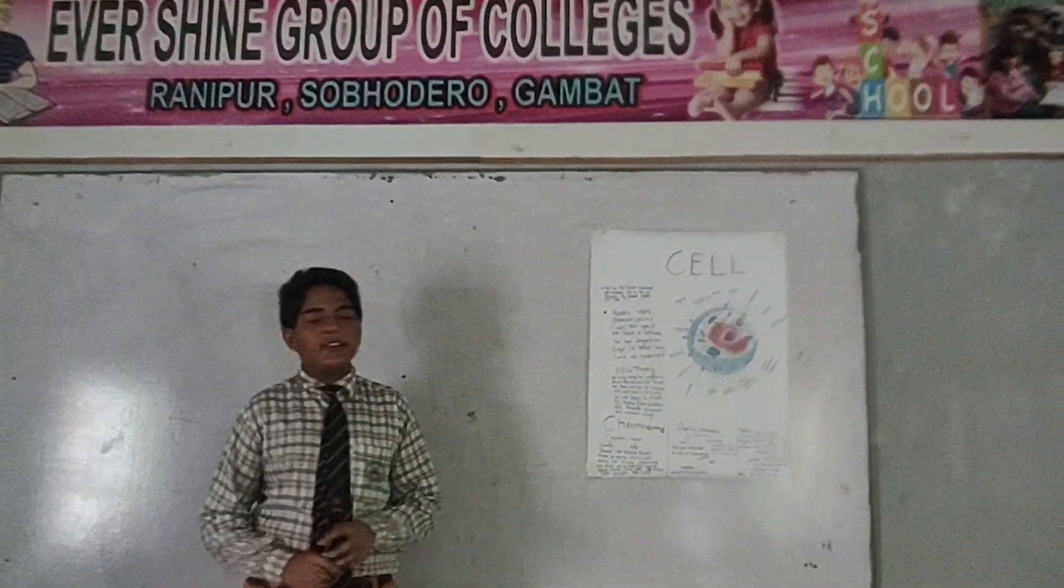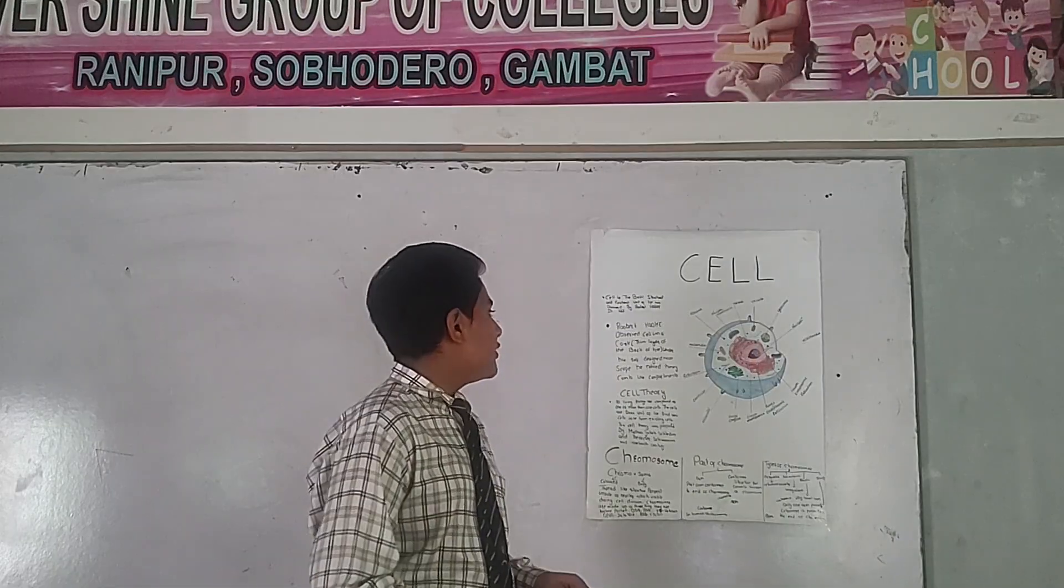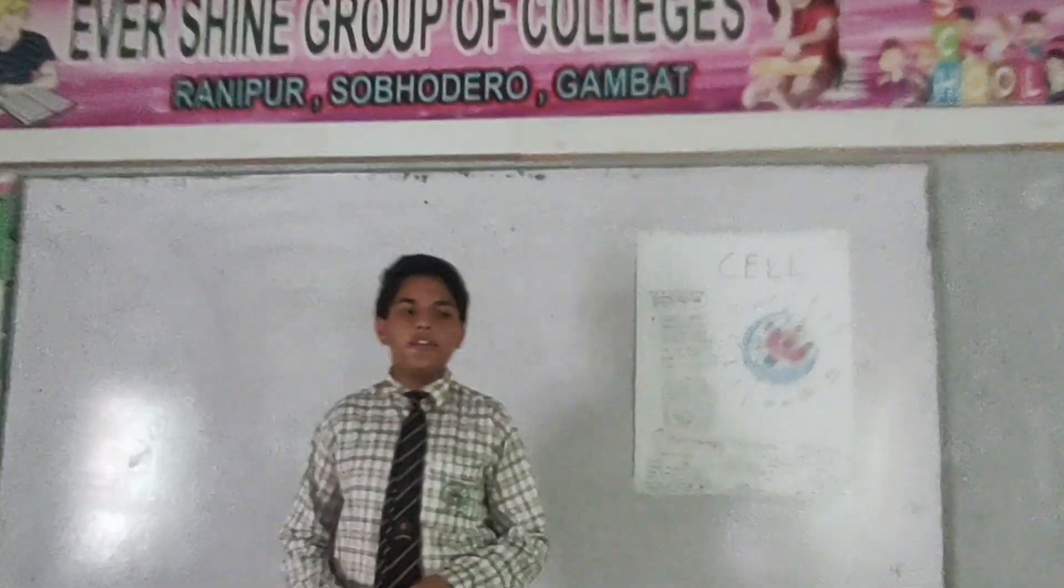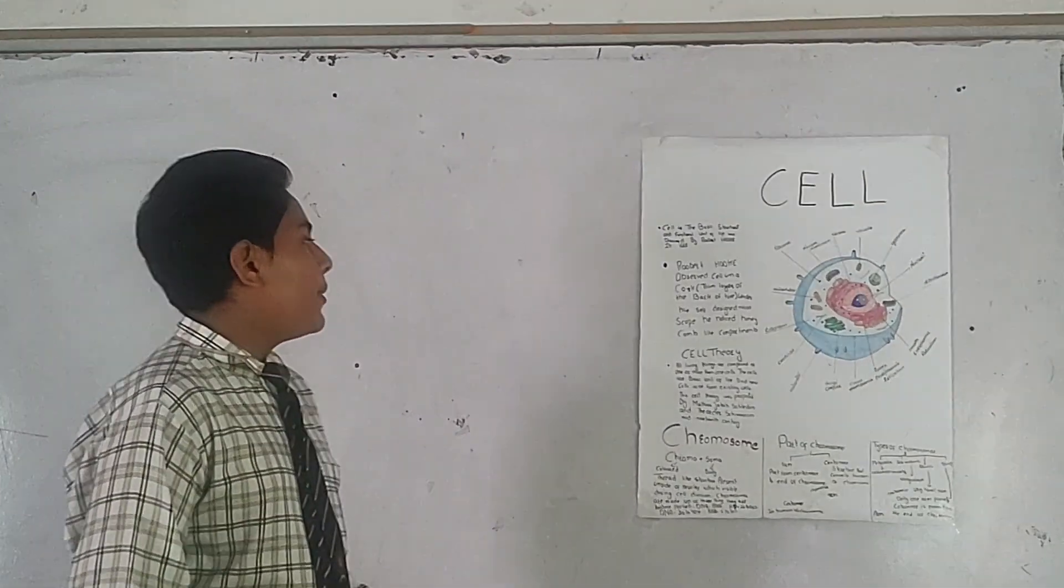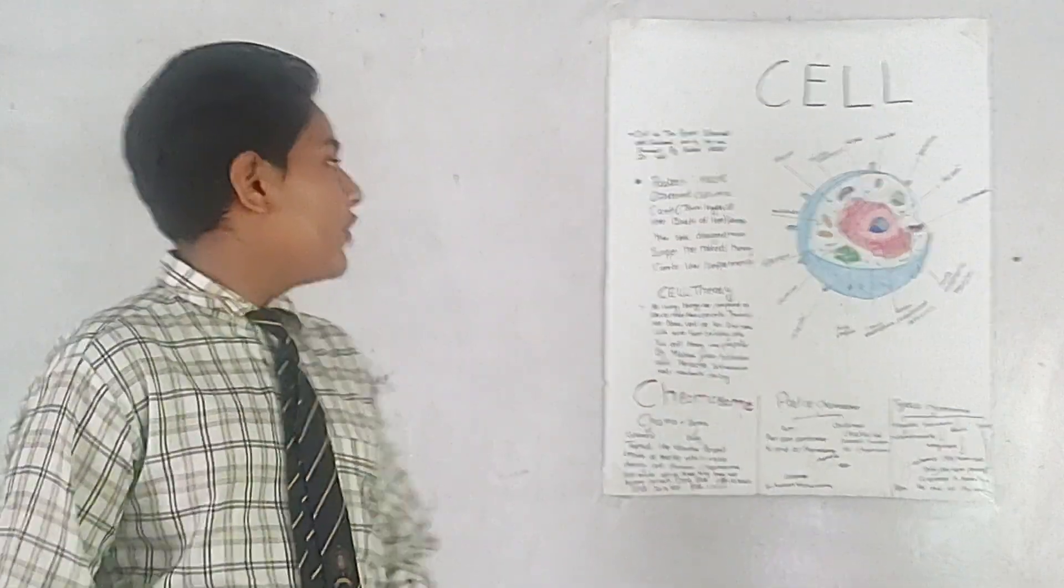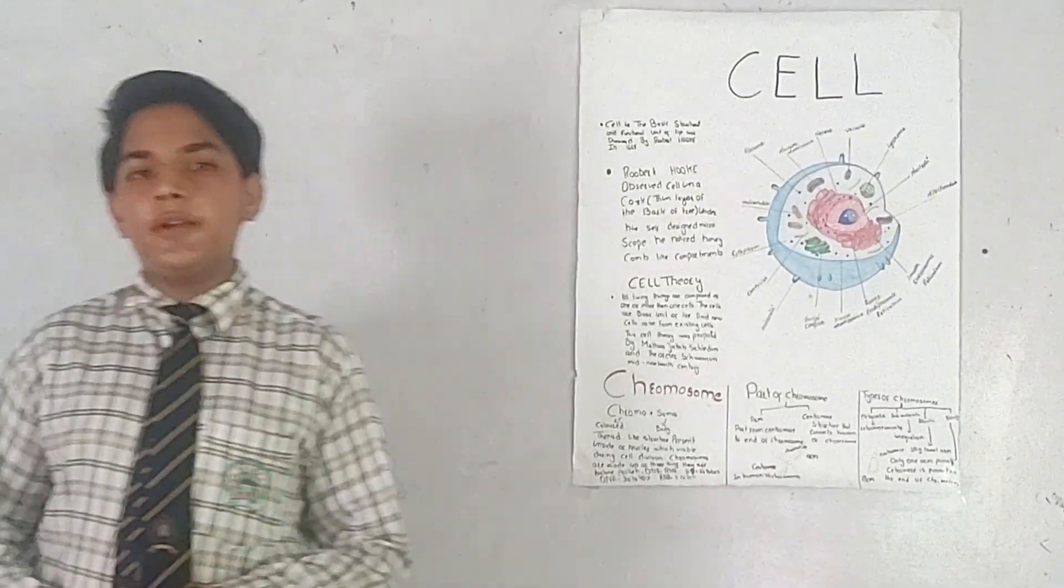What is Cell? Cell is the basic structure and functional unit of life. It was discovered by Robert Hooke in 1665. Robert Hooke observed cell in the cork. What is cork? The thin layer of bark of a tree, under a simple microscope.